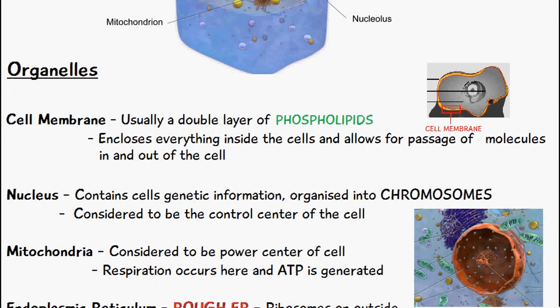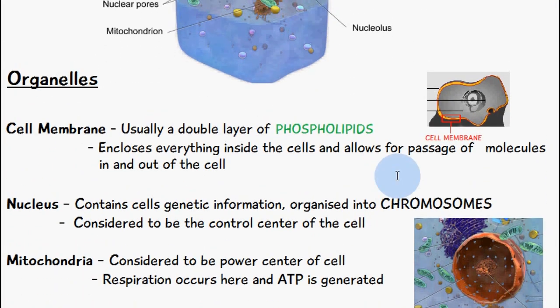We also have a mitochondria, which is considered to be the power center of the cell. Respiration occurs here and this is where ATP is generated. That ATP is used for a variety of different processes within the cell and also outside the cell as well.